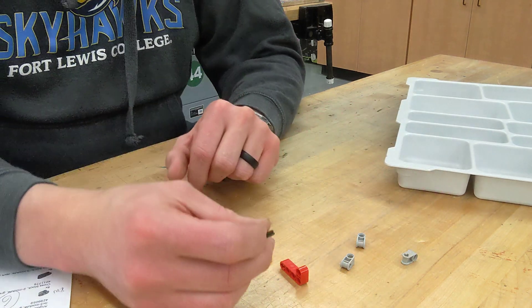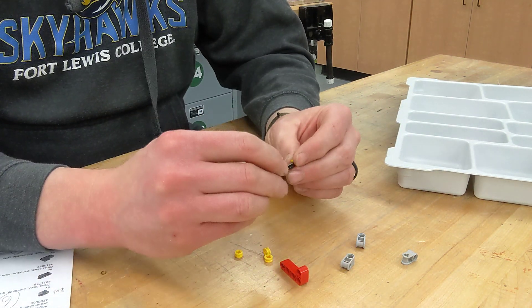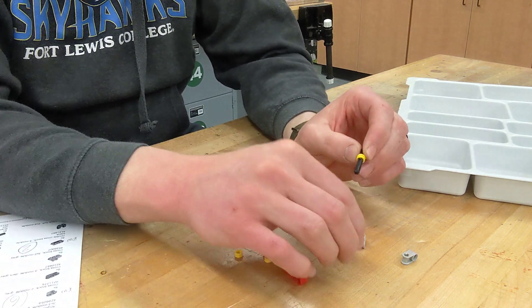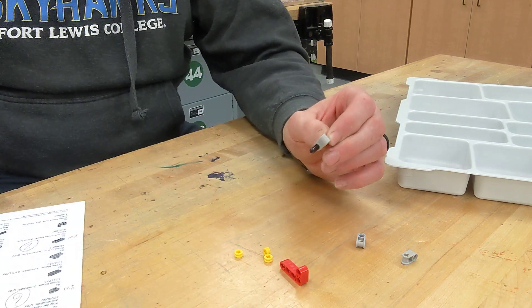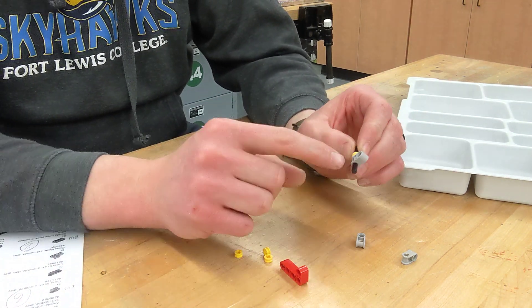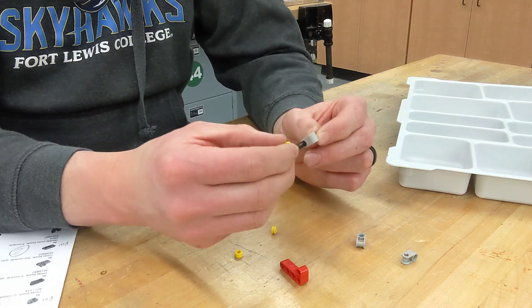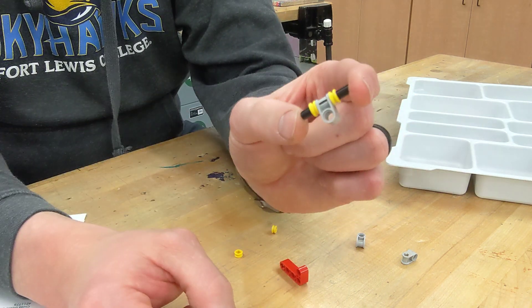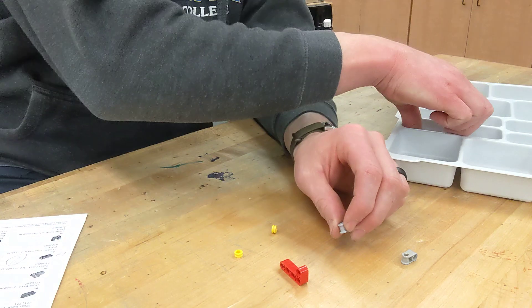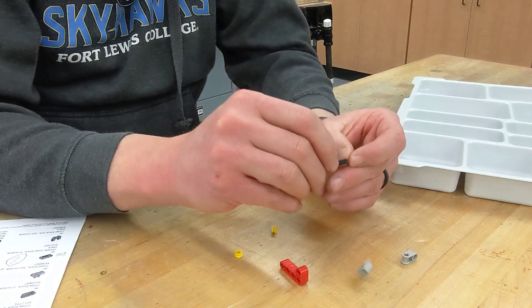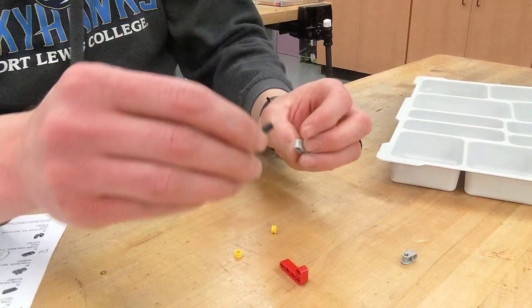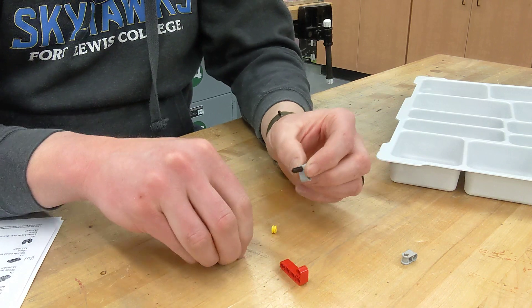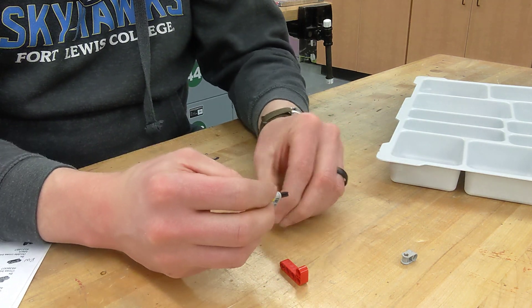All right, so the first thing that we are going to do is we're going to take our axle and put on a half bushing and one of these cross blocks, kind of sandwich it in like so. So you're going to make two of these. So there's one and here will be my second one. And here's going to be my second one. All right, so I got two of these.